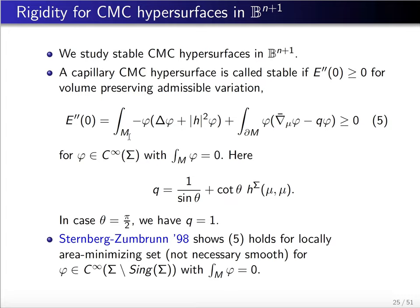Stability means this integral is non-negative for any smooth function phi satisfying the volume-preserving constraint, which gives the restriction that the integration of phi is zero. Here phi is the normal component of the variational field, and q is given by 1 over sin theta plus cotangent theta times the second fundamental form of the hypersurface acting in the conormal direction.